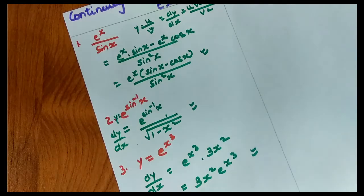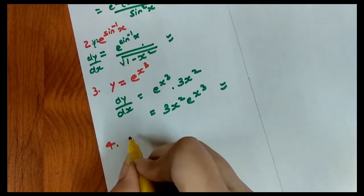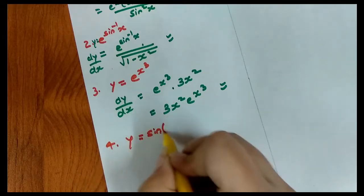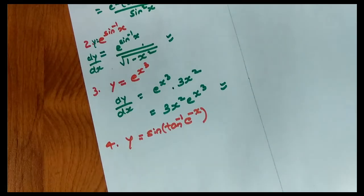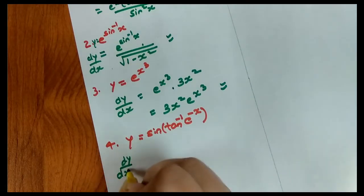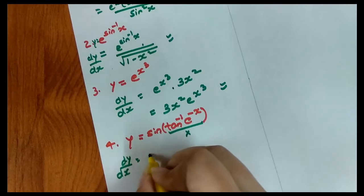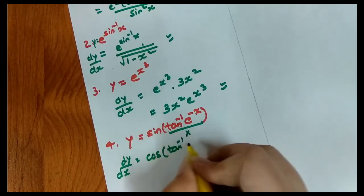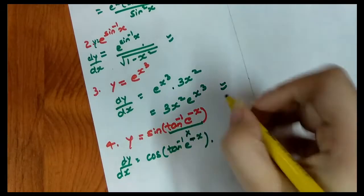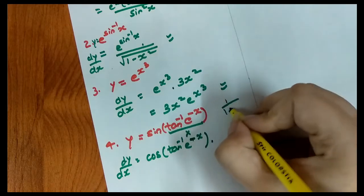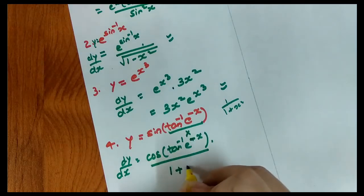Now the fourth question: y = sin(tan⁻¹(e^(−x))). Let's do this. dy/dx = cos(tan⁻¹(e^(−x))) — differentiating the outer sine gives cosine. Then we remove the tan inverse: the derivative of tan⁻¹x is 1/(1 + x²), so we get 1/(1 + e^(−2x)).